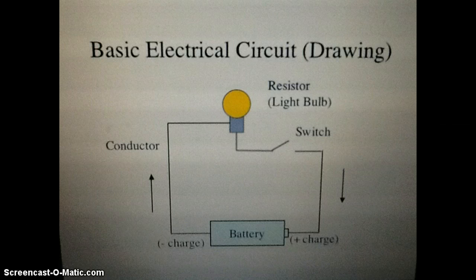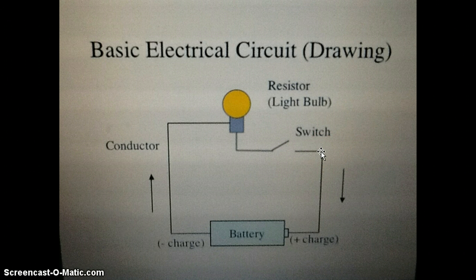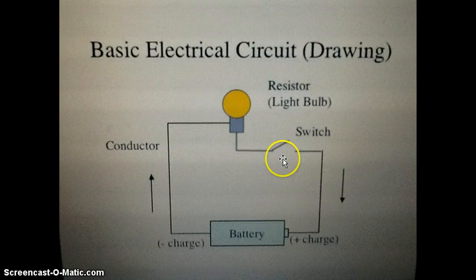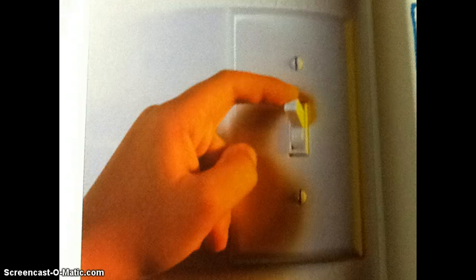Let's look at some investigations using our basic electrical circuit. Look at the place where the switch is — you can see on the picture that the switch is open. No electricity can pass through when the circuit is open. When the circuit is closed, it is called a closed circuit and electricity is passing through. When you put a light switch into an on position, the electrical circuit is closed. When you put a light switch in the off position, the electrical circuit is open.